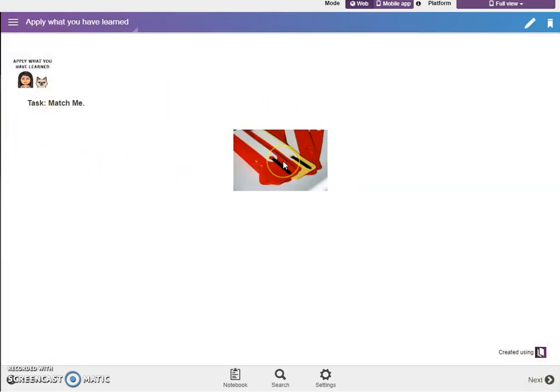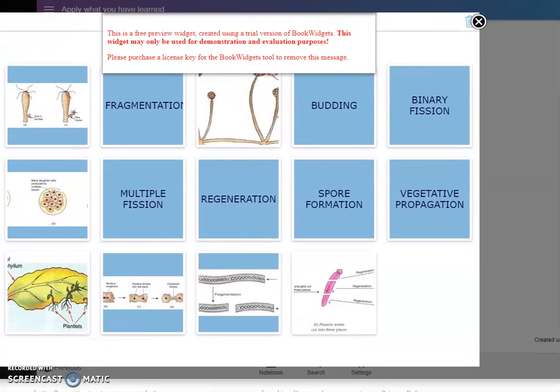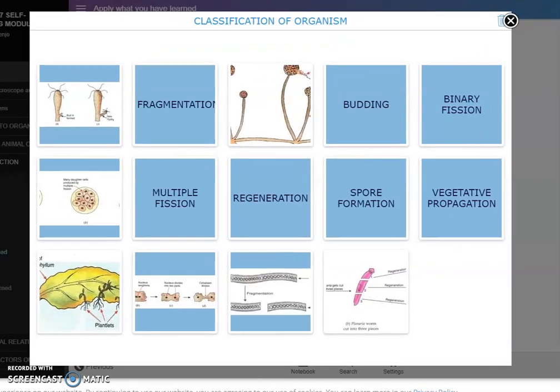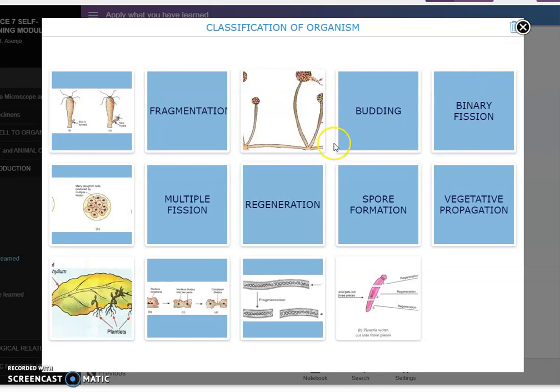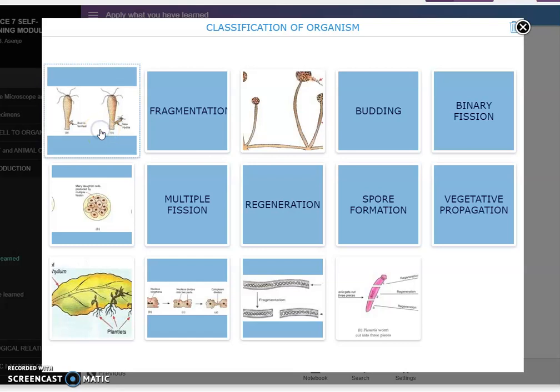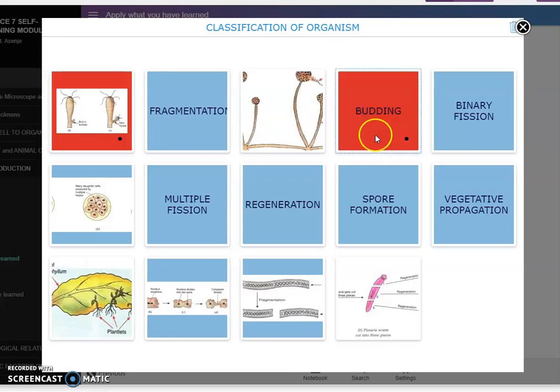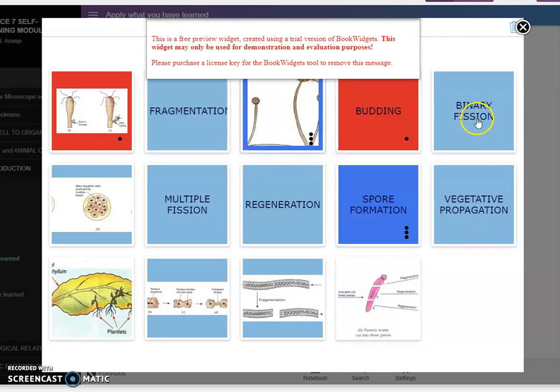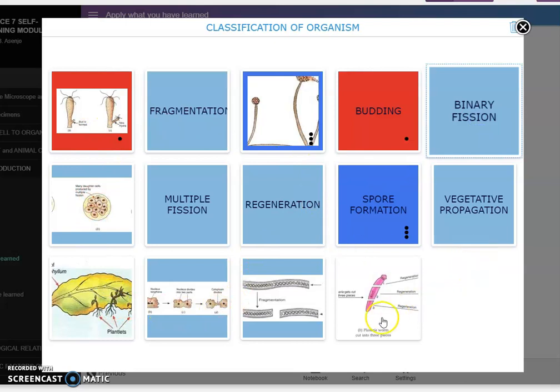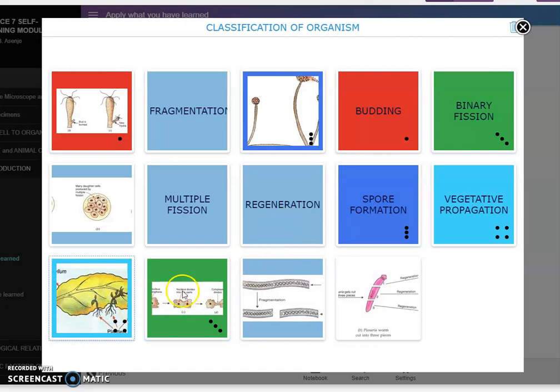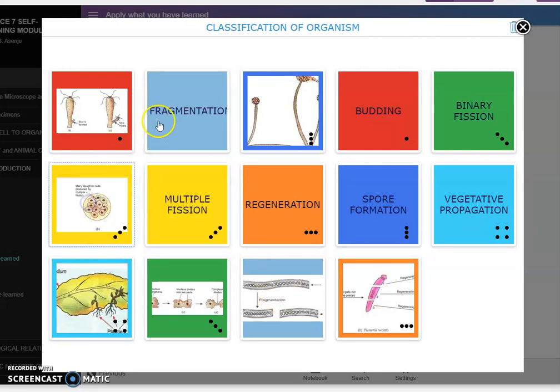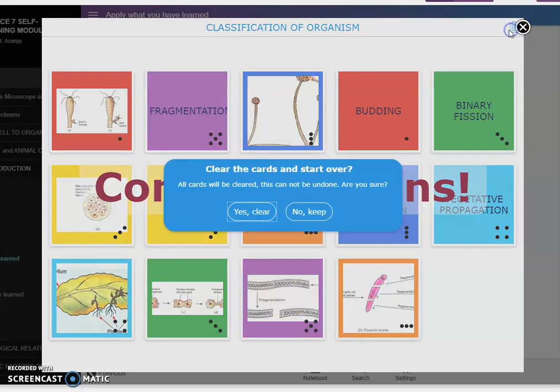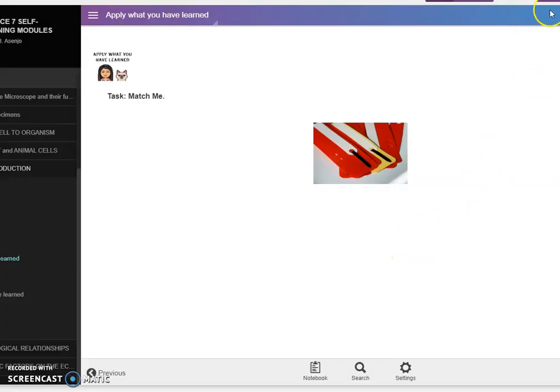Then match me. This is another activity to apply the knowledge that we have learned a while ago. So just classify the organism. Can you still recall? This is an example of budding. How about for fragmentation? We have spore formation, binary fission. Where's that binary fission? Vegetative propagation. Then we have regeneration. Multiple fission. Then fragmentation. So congratulations. Just clear.